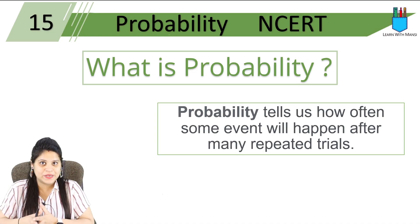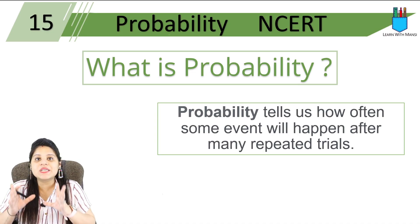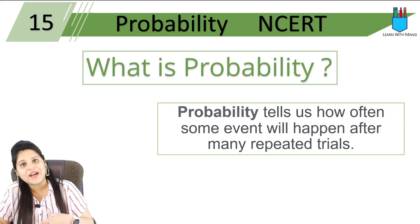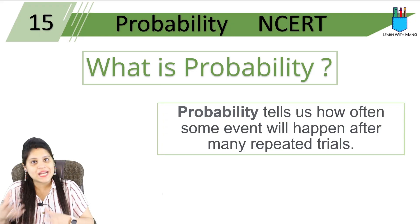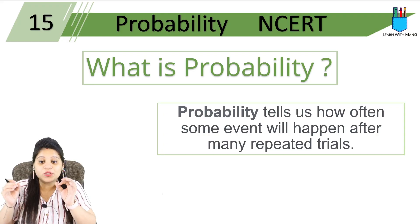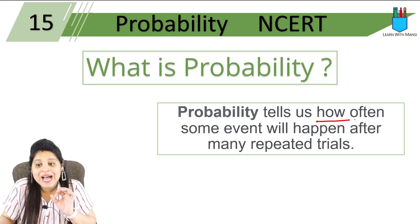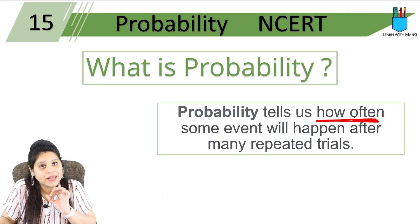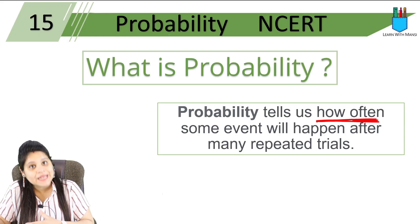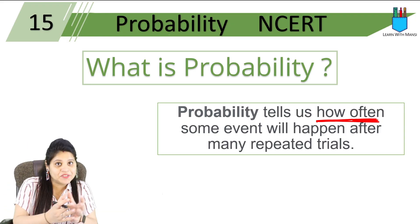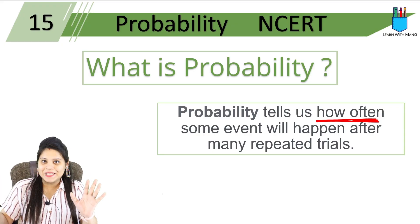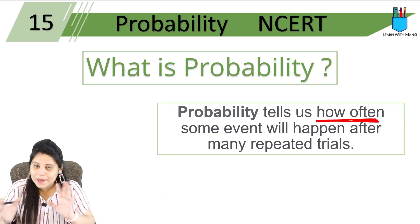In bookish language, we define probability like this: take any event, like rolling a dice. If you have rolled that dice 50 times and you got 5 twenty times, probability tells us how often some event is happening. We repeat the trials and on that basis determine how many times an outcome occurs. So that is probability.